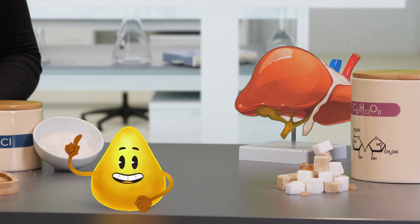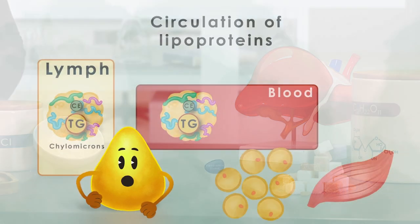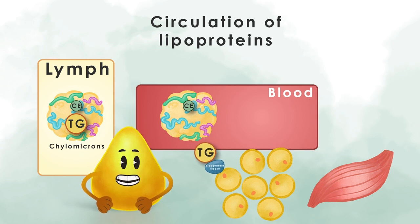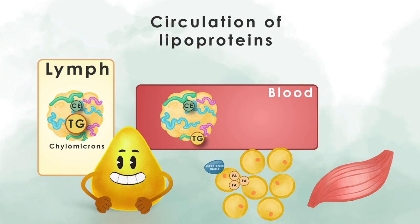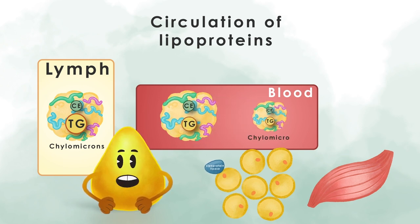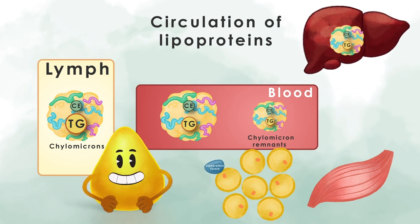There's an enzyme called lipoprotein lipase sitting outside the cells, which hydrolyzes the triglycerides, and the released fatty acids are taken up by the tissues. With this action, the chylomicrons shrink and become so-called remnants that are taken up by the liver.